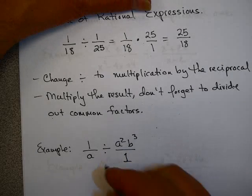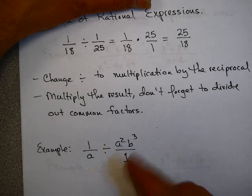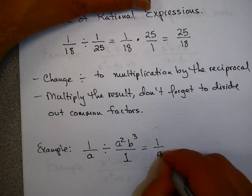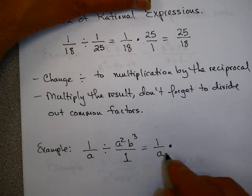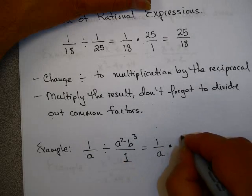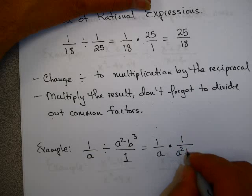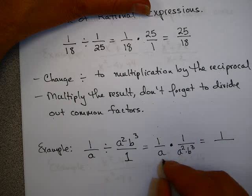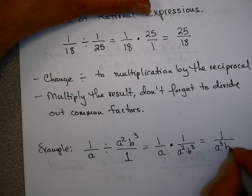Let's take a look at this rational expression. It works the same way. We're going to leave 1 over a the same, then change division to multiplication by the reciprocal. So 1 times 1 is 1, a times a squared is a cubed, and b cubed.